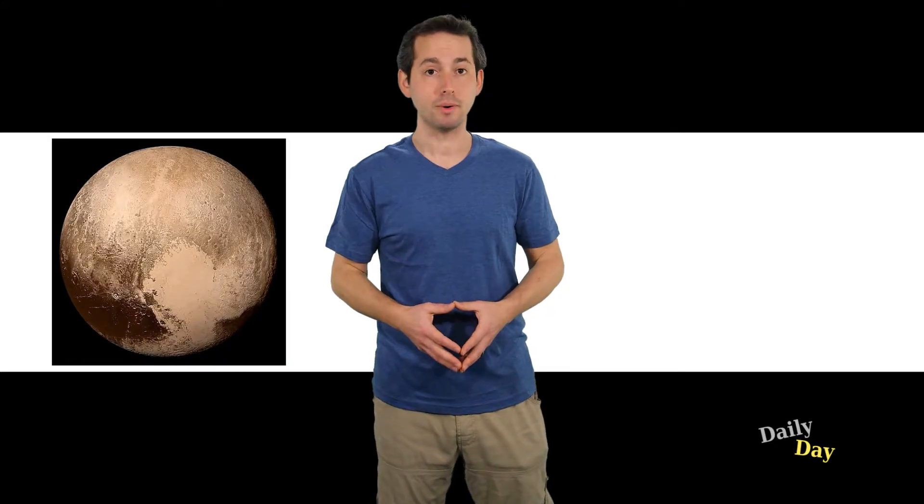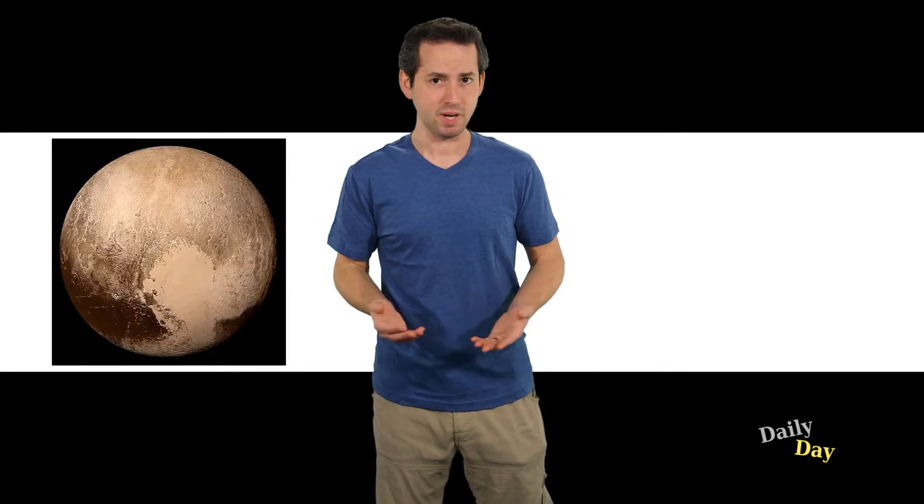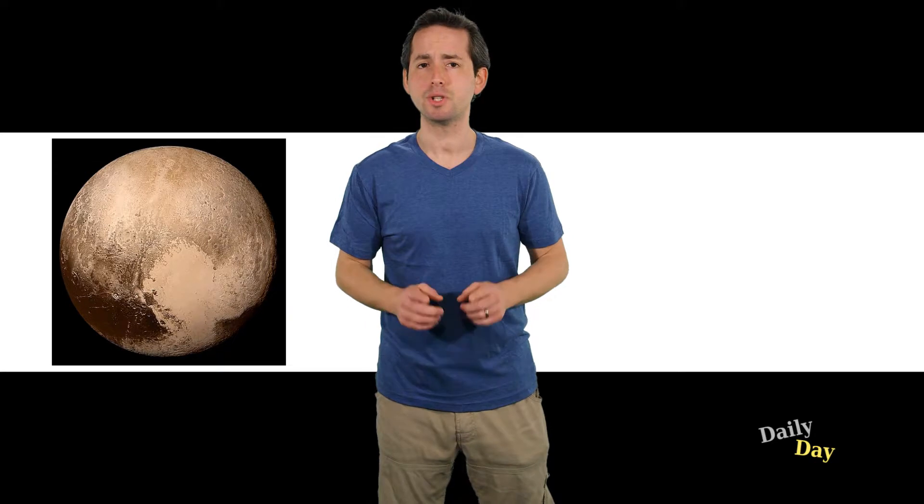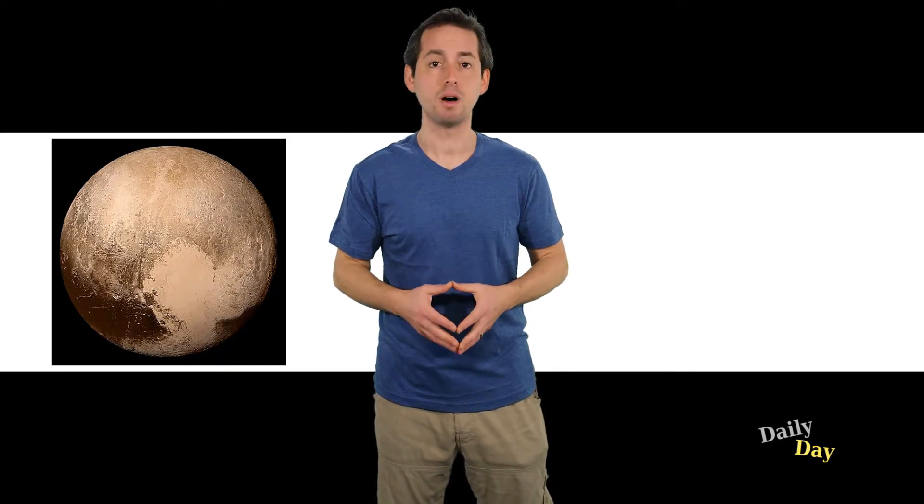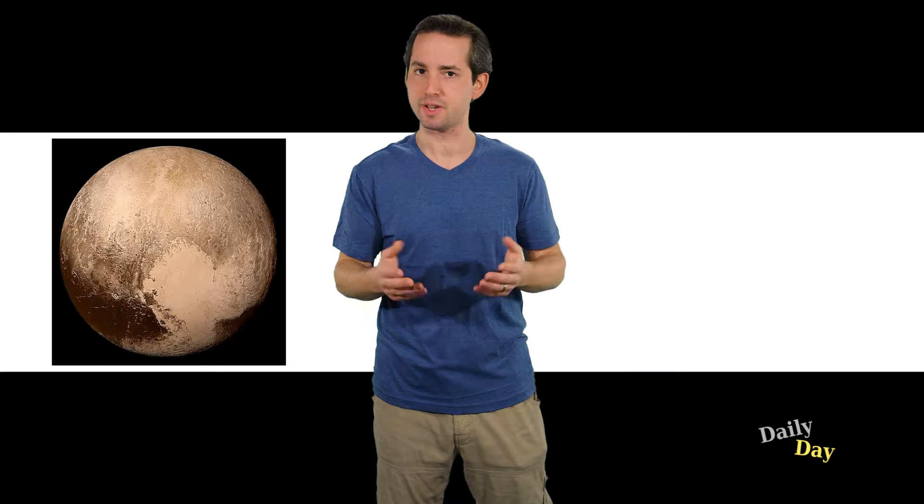This is February 18th. Today in 1930, the ninth planet Pluto is discovered, and it's pretty far away. It takes Pluto about 248 times longer than the Earth to make one rotation around the Sun.